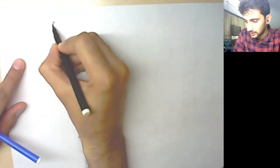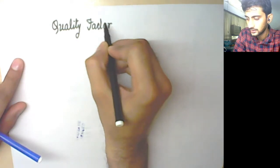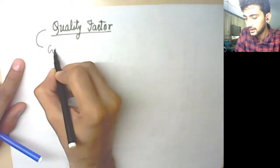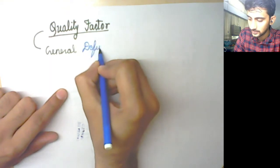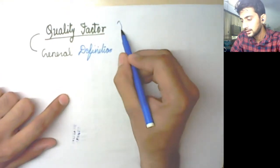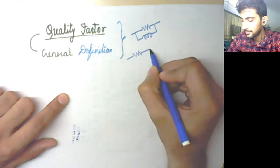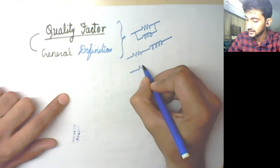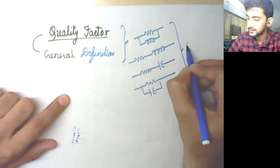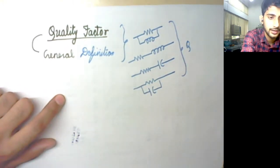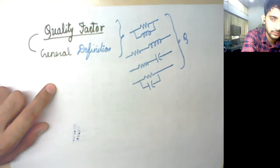In this class we will focus more on the quality factor. We will discuss a general definition of it, and we will learn about the quality factor in series RL circuit, parallel RL circuit, series RC circuit and parallel RC circuit, and how it would be dependent on the values of resistances and capacitances. This is what we have to learn in today's class.